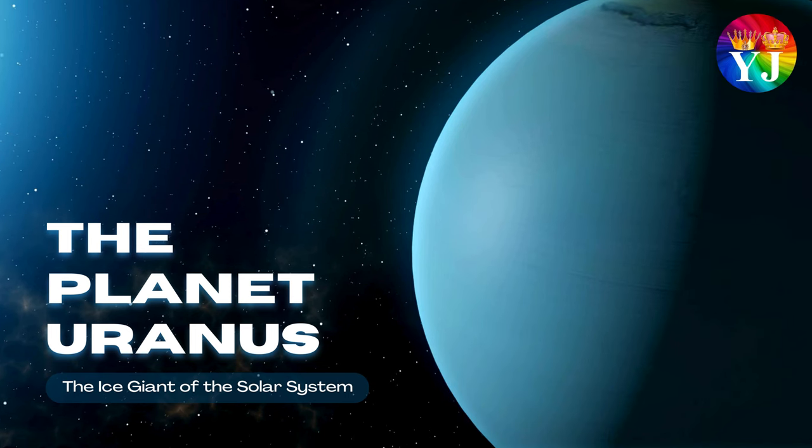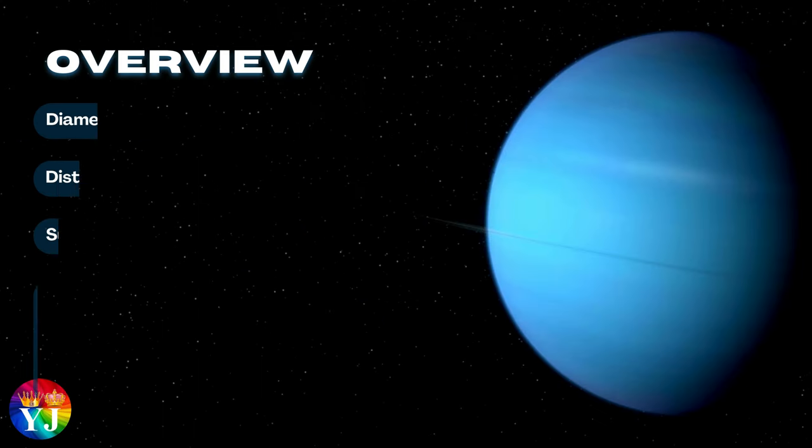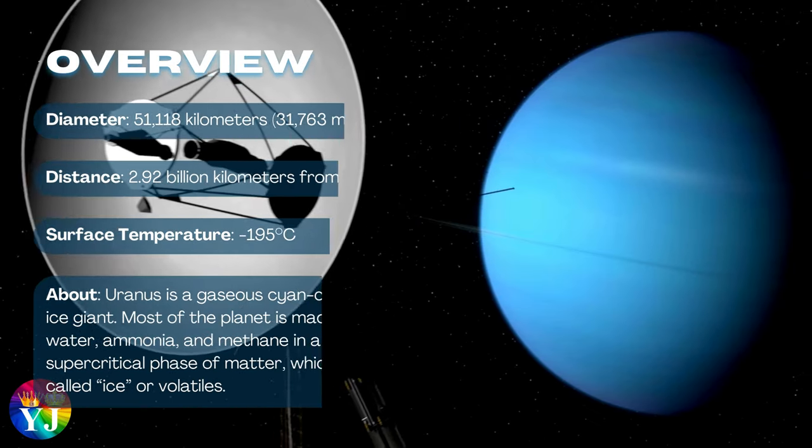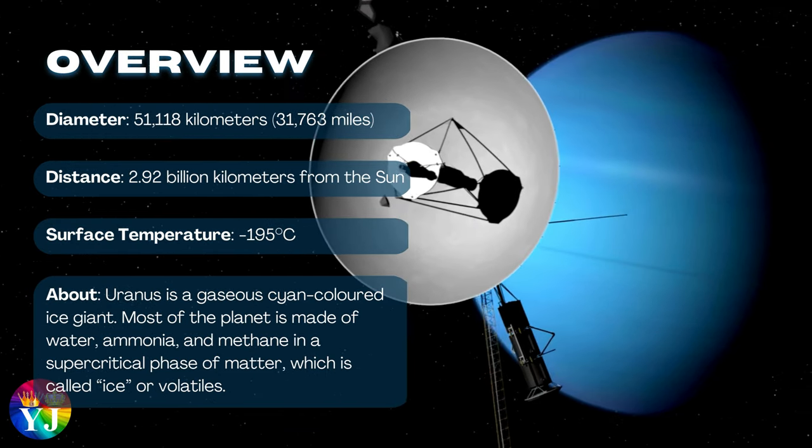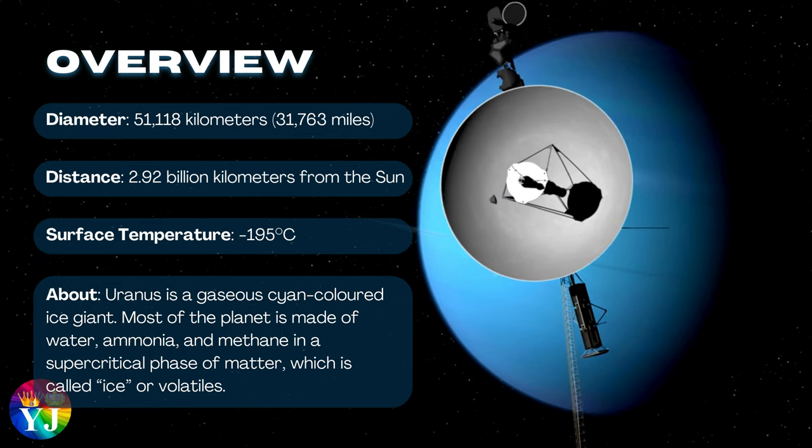The planet Uranus, the ice giant of the solar system. Overview of Uranus: Diameter 51,118 kilometers, Distance 2.9 billion kilometers from the Sun, Surface temperature minus 195 degrees Celsius.